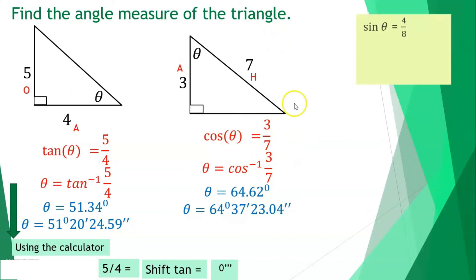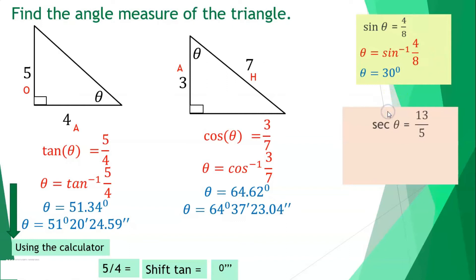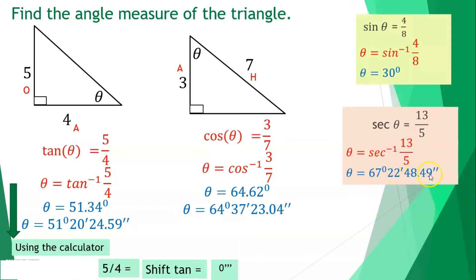Another example: sine theta = 4/8, so theta = arcsin(4/8) = 30 degrees. Another: secant theta = 13/5, so theta = arc-secant(13/5). Using the calculator, theta ≈ 67°22'48.49''.